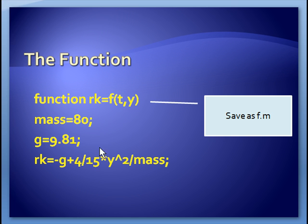I put the semicolons here so that this thing doesn't output to the command window every time it's called. And then since this is f of t and y, we save this as f.m. And when we call the ODE solver, we'll tell it that we're solving this function f.